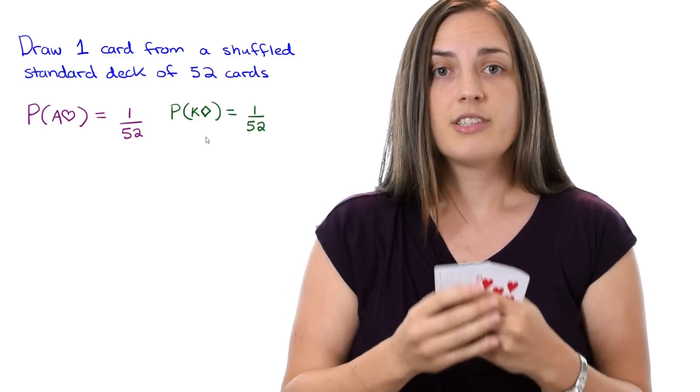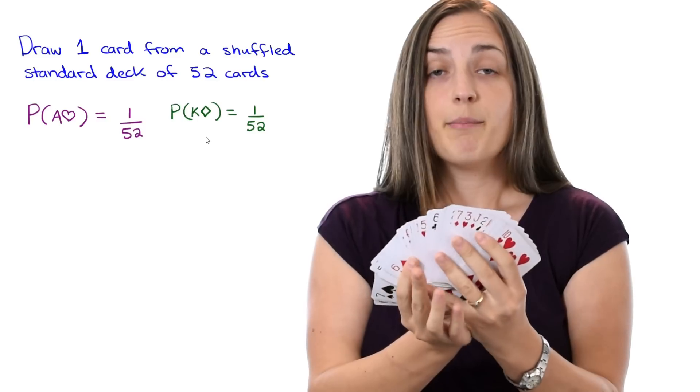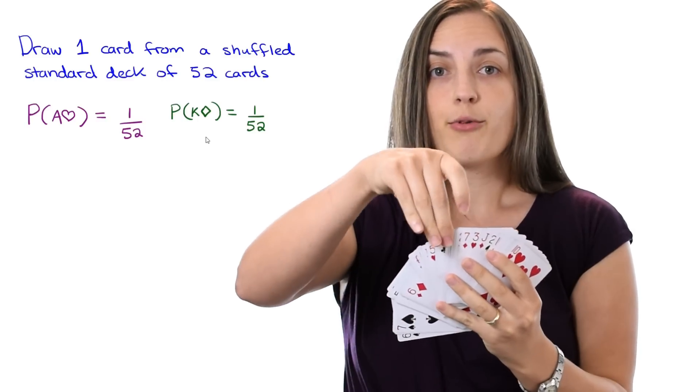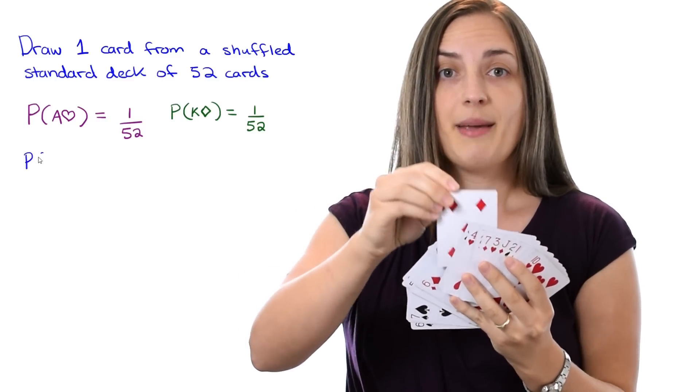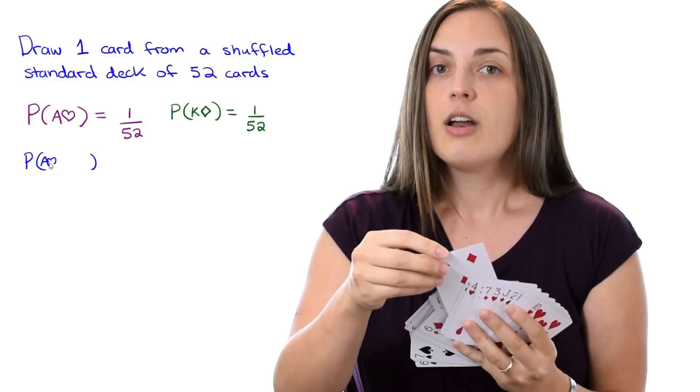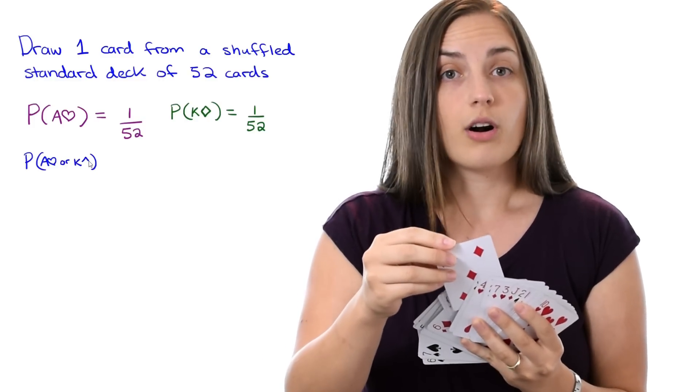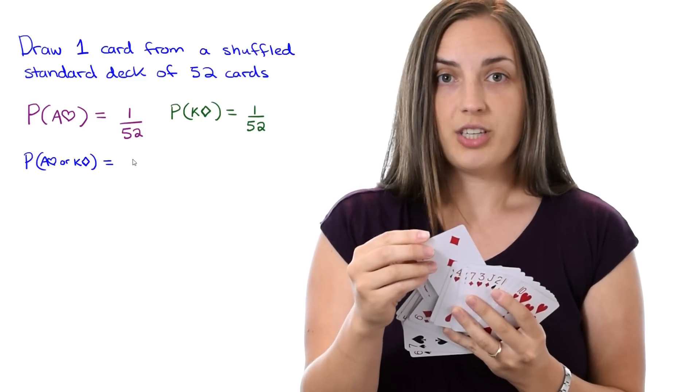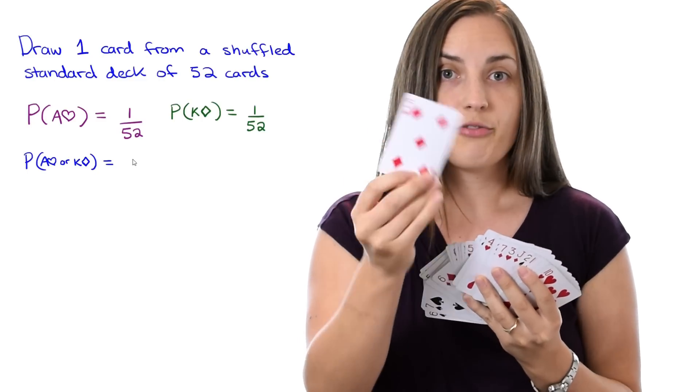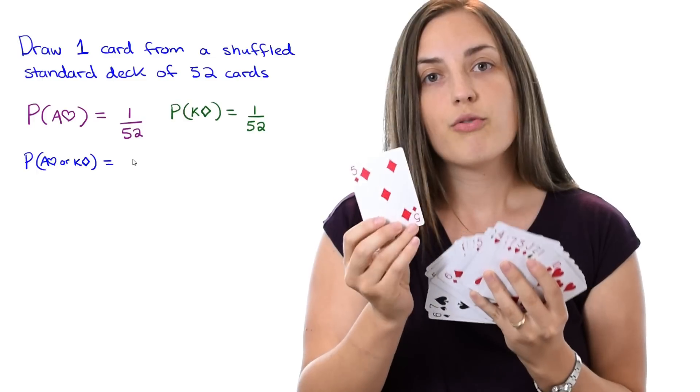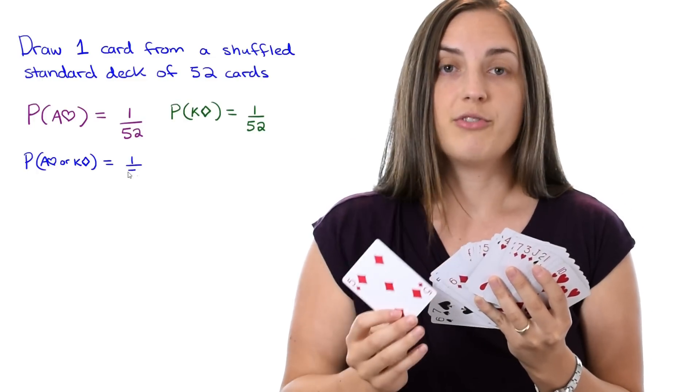Now let me ask you a secondary question. If I was to shuffle the deck, lay them out in front of me and pick at random, what is the probability that the card I pick is either an Ace of Hearts or a King of Diamonds? Well there are two good options and the overall probability will be 2 out of 52.